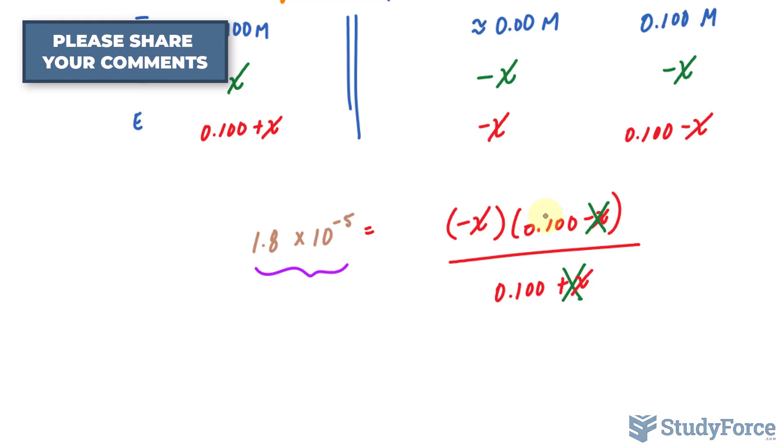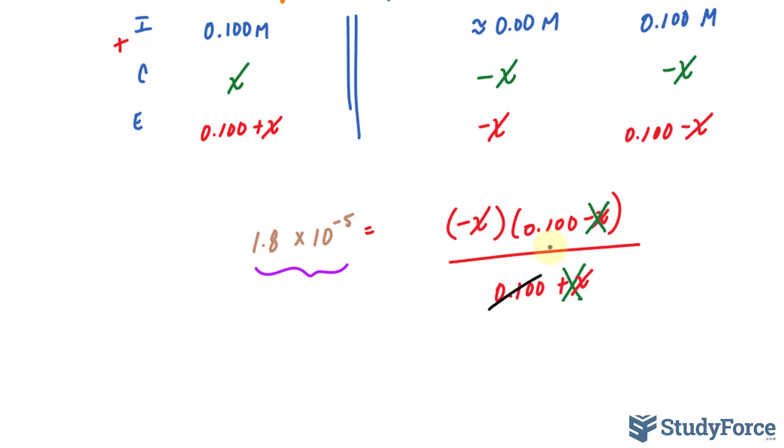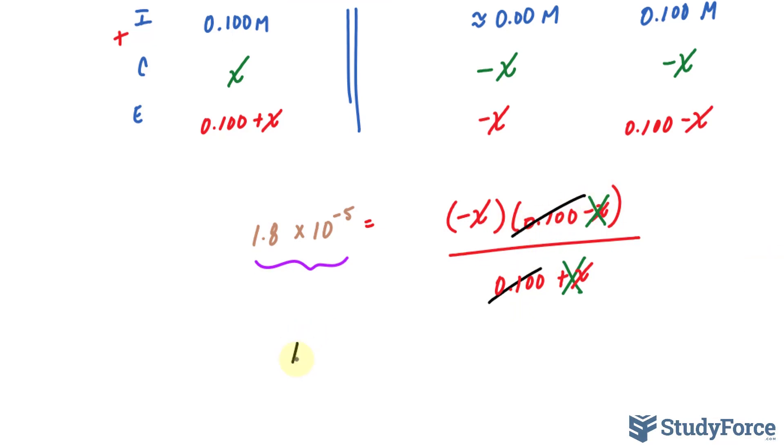Let me show you. Let's hypothetically say that we did remove minus x and plus x from this. We would end up with the expression negative x times 0.100 over 0.100. You can then cancel these two out, leaving you with 1.8 times 10 to the power of negative 5 is equal to negative x. Dividing both sides by negative 1 to eliminate this negative 1 in front, we end up with negative 1.8 times 10 to the power of negative 5 is equal to positive x. So I've just removed that negative.